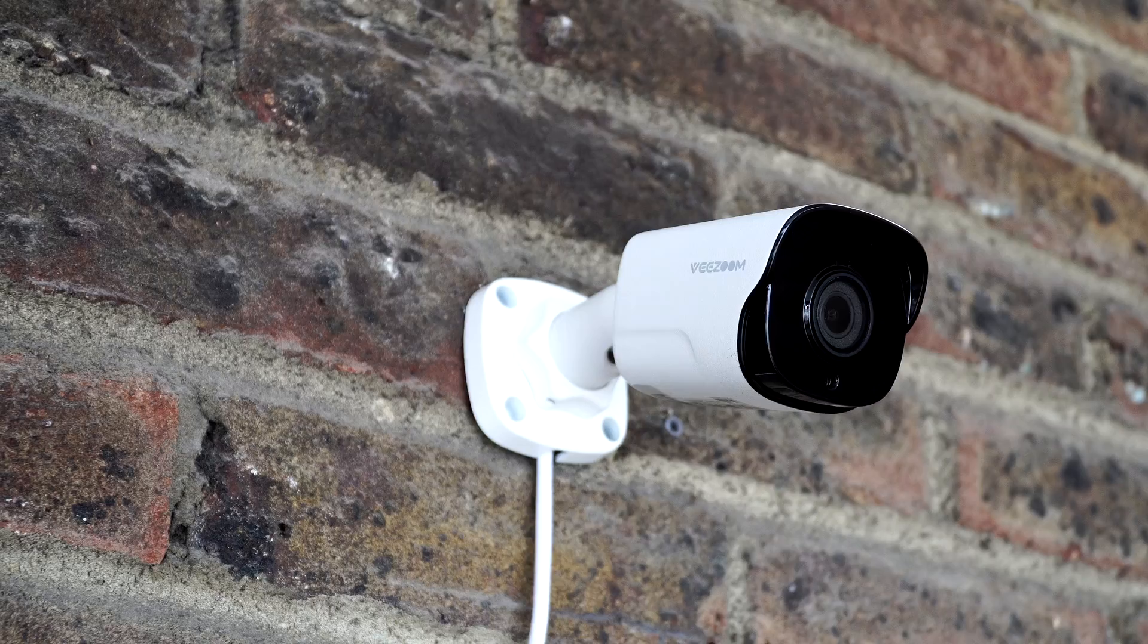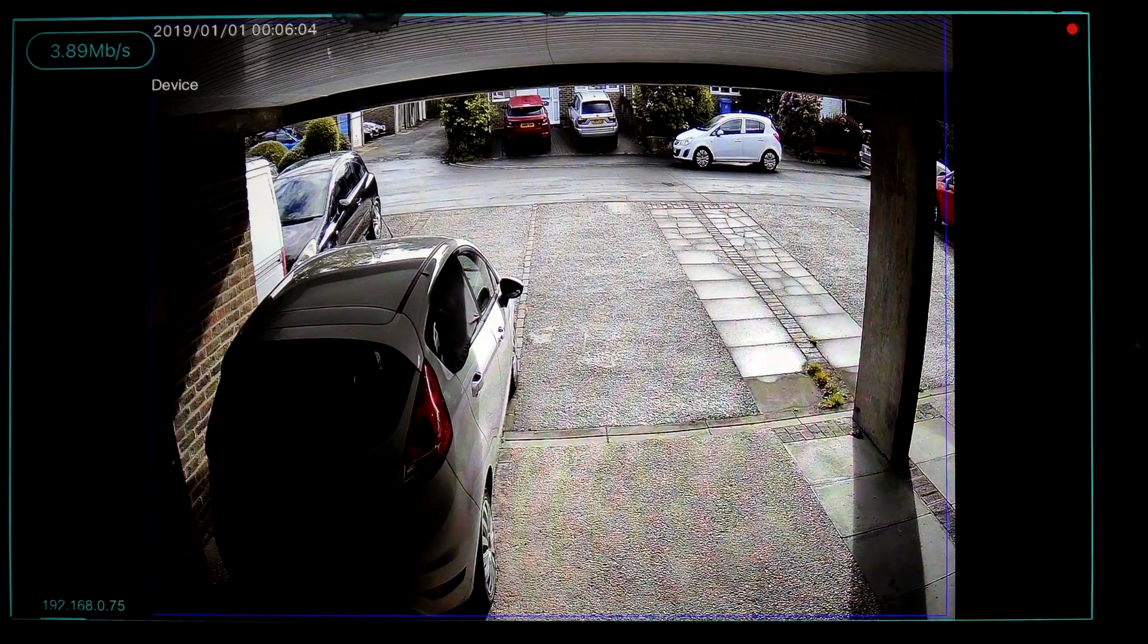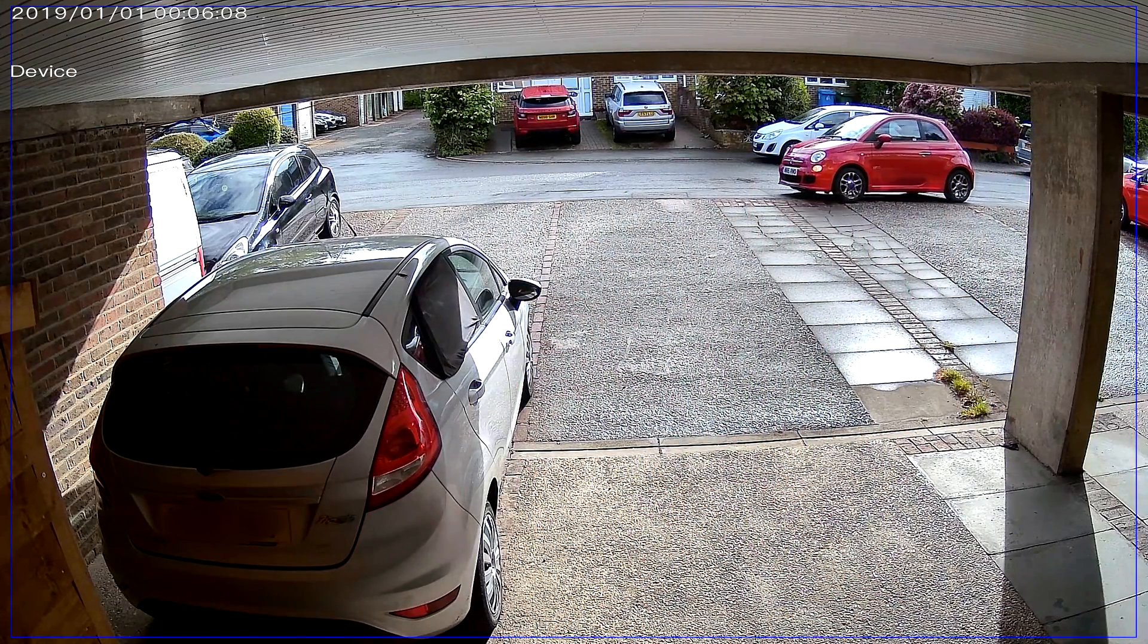Now to mount these cameras to a wall, you want a 5.5 or a 6mm masonry drill bit where you can then use your plugs and screws.